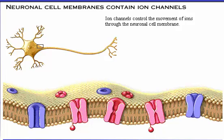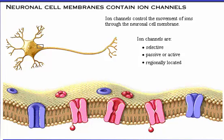Ion channels control the movement of ions through the neuronal cell membrane. The channels are selective, either passive or active, regionally located, and functionally unique. In the next several pages, we will examine each of these four characteristics.